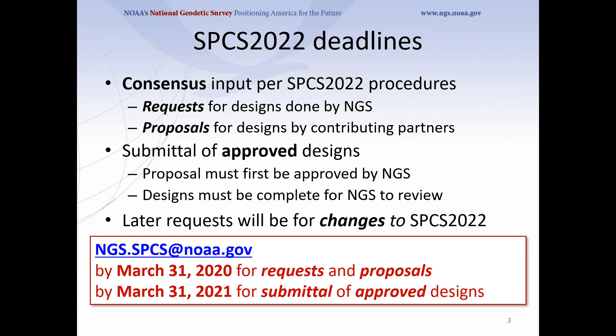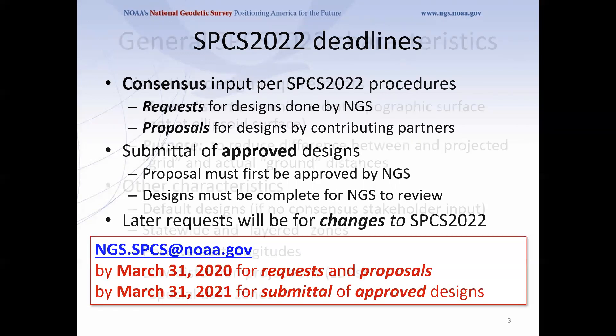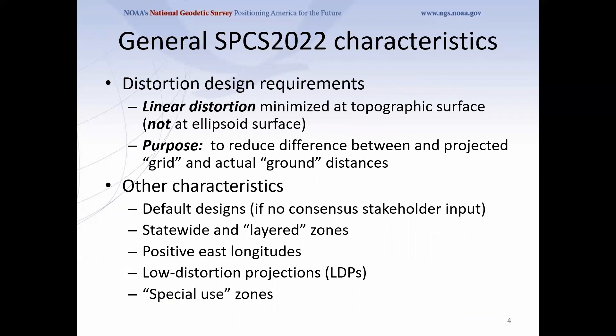Some people are getting a little worried about those deadlines. One thing to note: for states that can't get everything done in time, you'll still be able to make changes to your state plane system after 2022, so it's not the end of the world. A lot of the work involved is not necessarily technical in nature — a lot of it is getting people to agree. Getting all stakeholders on the same page about what they want for their state probably takes the most time.